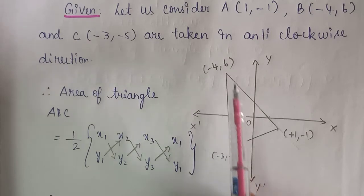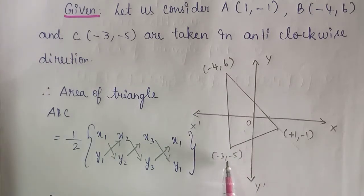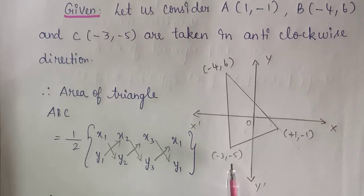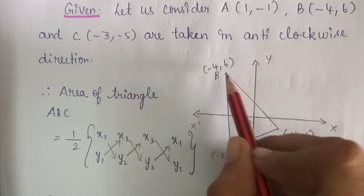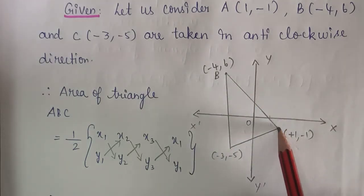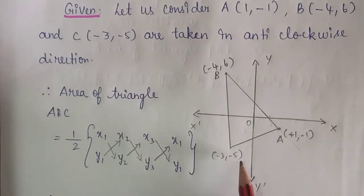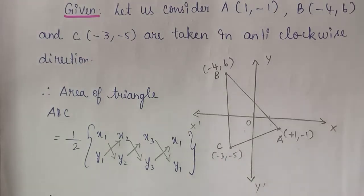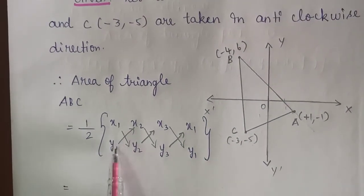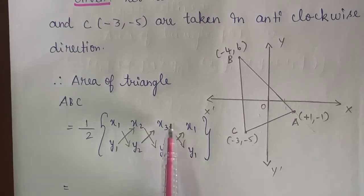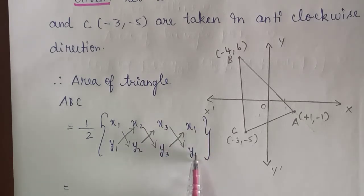Let us consider A of (1, -1), B of (-4, 6), and C of (-3, -5), taken in anti-clockwise direction. Both coordinates of C are negative, so it lies on the 3rd quadrant. We know that the area of triangle ABC is equal to (1/2) into x1, y1, x2, y2, x3, y3 and x1, y1.